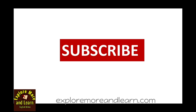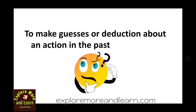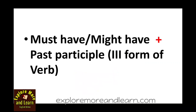We use must have or might have to make guesses or draw conclusions about an action in the past. When you make a guess about an action which has happened in the past, you use either must have or might have. You should remember that must have and might have are used with the third form of the verb.